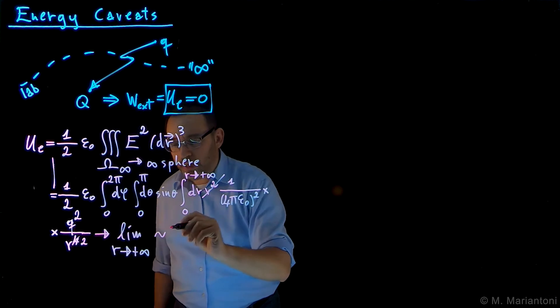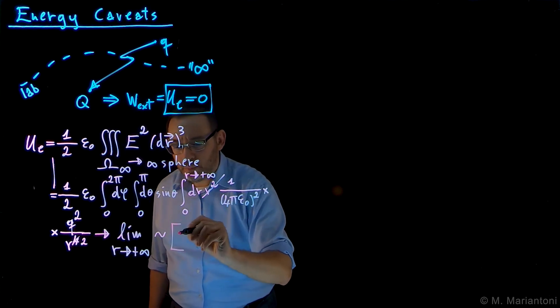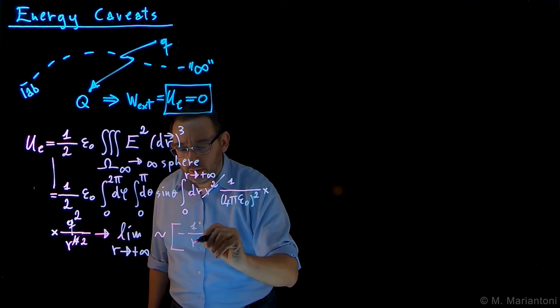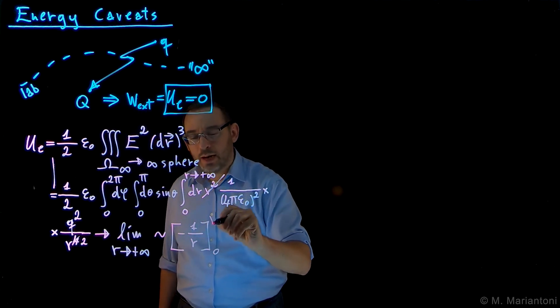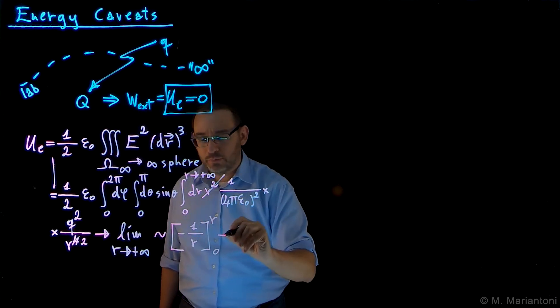This limit of something proportional to—where this proportionality is because all these are constants, so again, 1 half epsilon naught, 2π, 2, and 1 over 4π epsilon naught squared and Q squared are all constants—so the only integration is 1 over R squared, which gives us minus 1 over R, integrated between 0 and R, which now we are pushing to infinite.